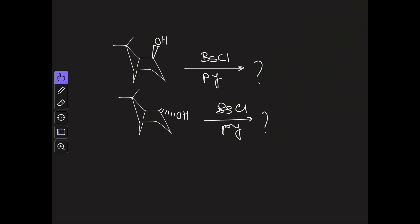Now I'm going to solve this question. You can see two isomers are given. The only difference is that in one case the OH is on the top side, and in the other case it is on the bottom. Both are treated with BsCl (brosyl chloride), which is used similarly to tosyl chloride, in the presence of pyridine. I have given four options but I'm not showing them here — you can watch that in the thumbnail or in the community tab.